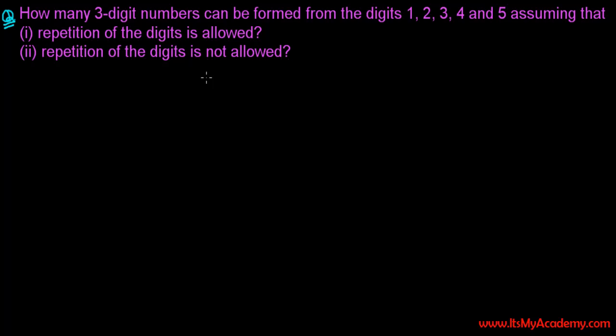Let's do another exercise from the concept of fundamental principle of counting. The question is how many three-digit numbers can be formed from the digits 1, 2, 3, 4, 5. We have five digits here and from those five digits we have to make three-digit numbers. Assuming that the repetition of the digits is allowed, first question, and repetition of the digits is not allowed.